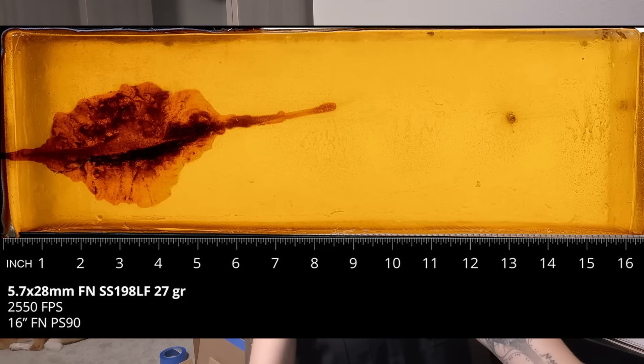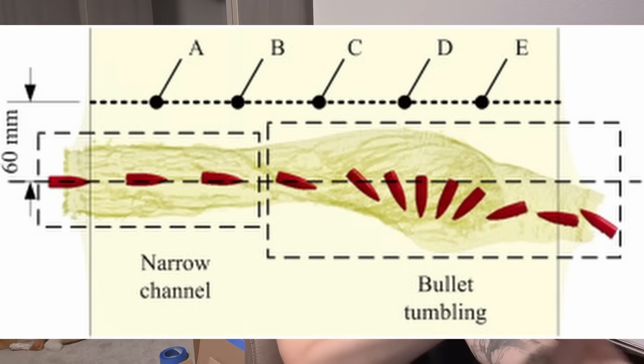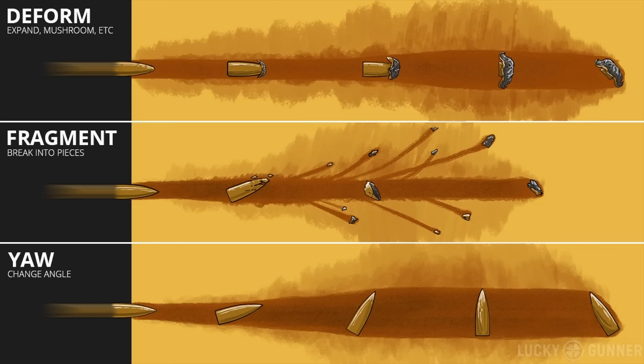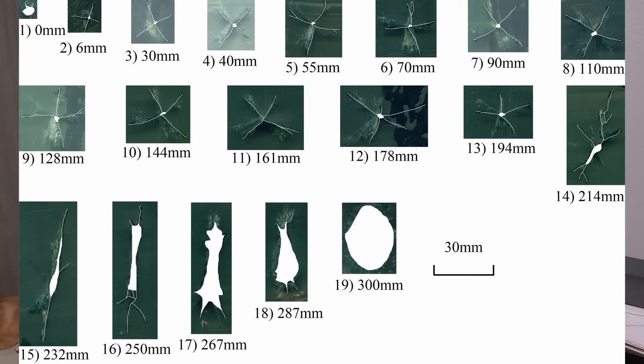Other things to observe within the block include trajectory — is the flight path straight? Did the round tumble at some point? Does it have early yaw, which is more destructive? Does it have inconsistent or unreliable yaw? How does pathing look upon impact? It's also common to test the effect of entry angle — while it's easy to shoot straight into a block, realistically you'll be shooting at different angles in a real-world setting, and you need to know how the round performs through various angles of attack.